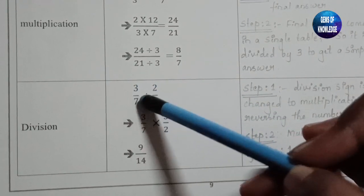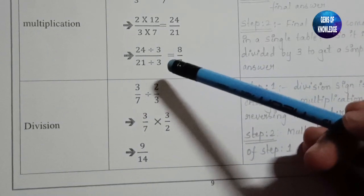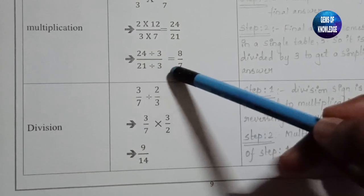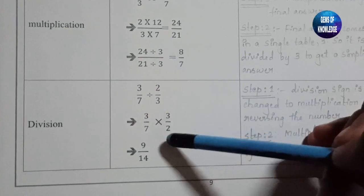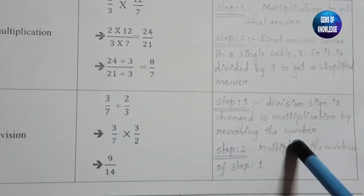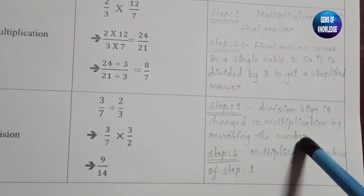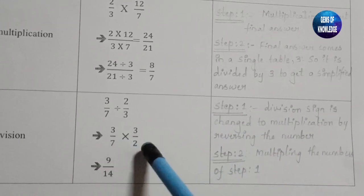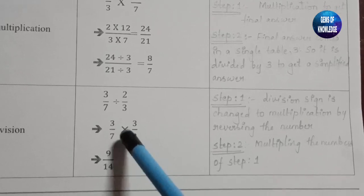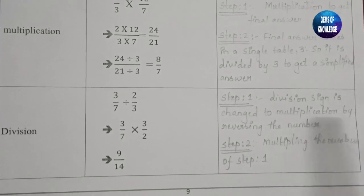For division: 3/7 ÷ 2/3 — change the division sign to multiplication and reverse the second fraction (2/3 becomes 3/2). Then multiply: 3×3 = 9 and 7×2 = 14, giving the answer 9/14.